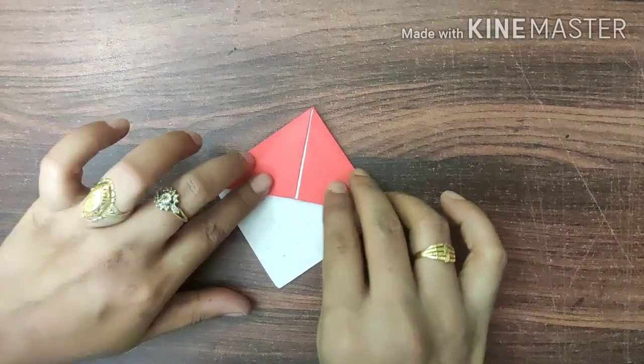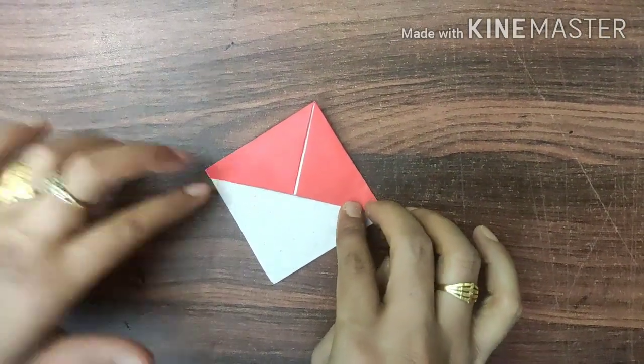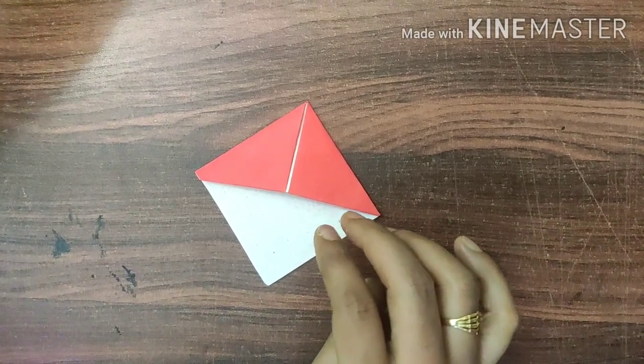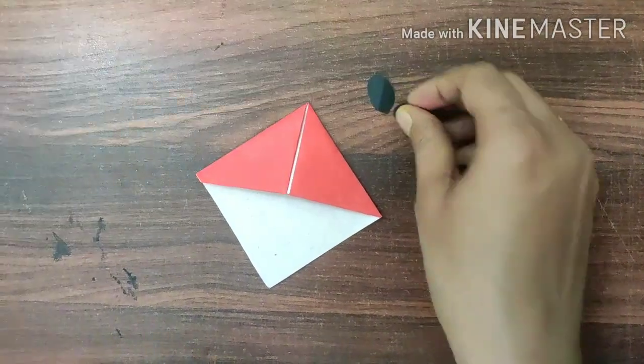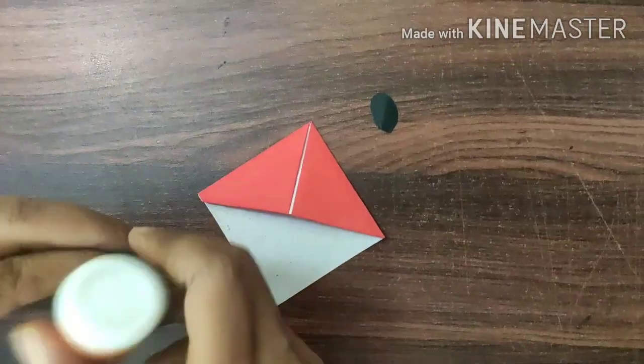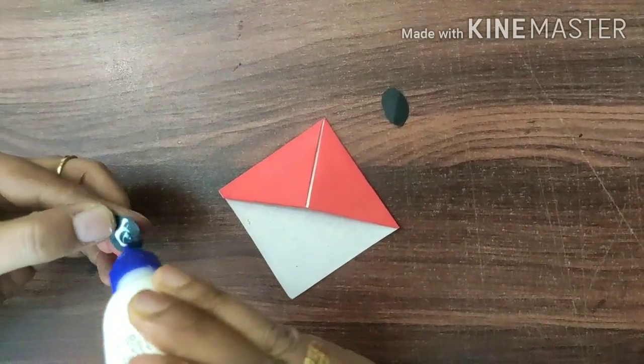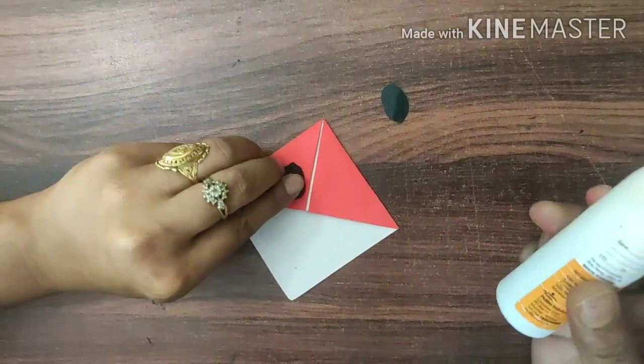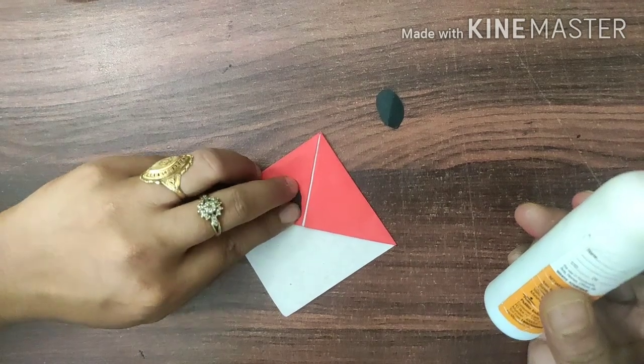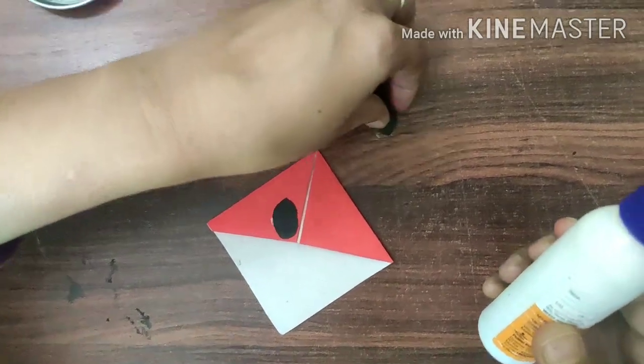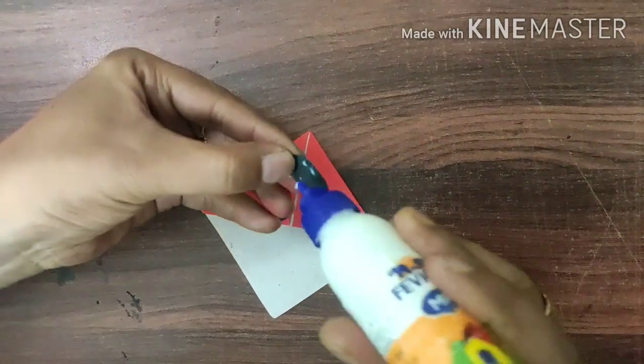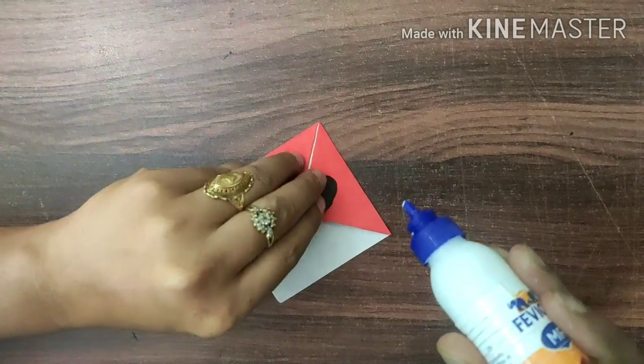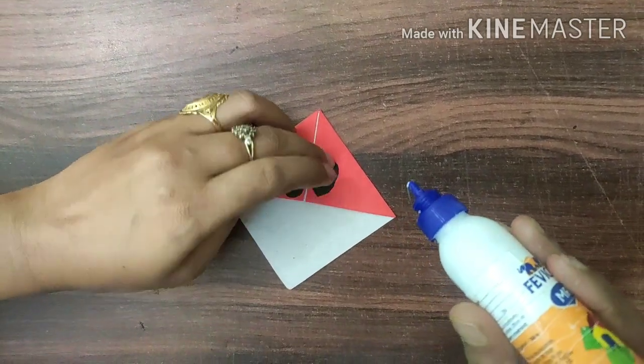Now decorate it as you like. First of all, take the oval cutouts to make eyes. Paste them as you like. Do the same with the other eye cutout.